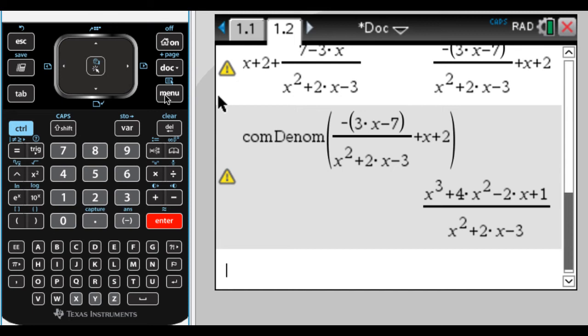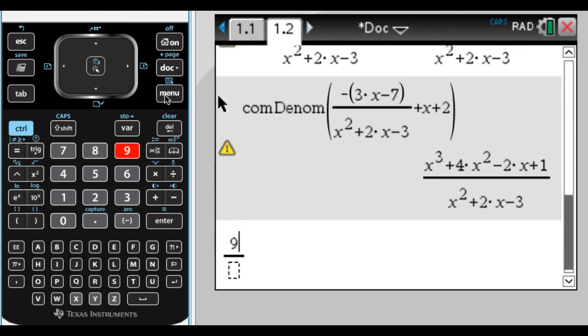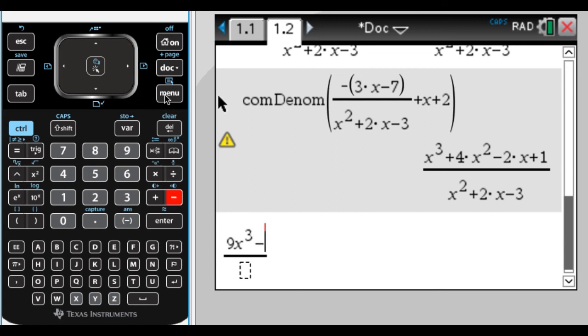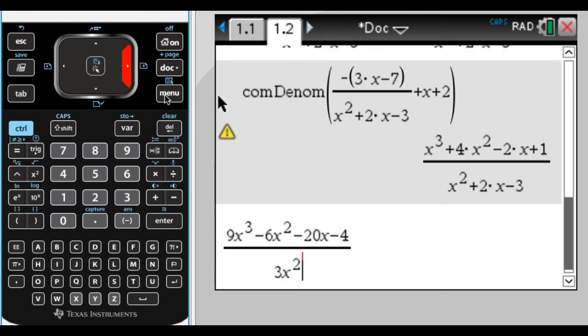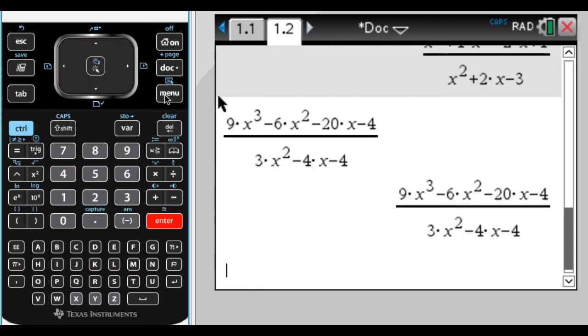So I'll do one more where I just get the answer straight away. So the next one I'm going to do is 9x cubed minus 6x squared minus 20x minus 4, all over 3x squared minus 4x minus 4. So when I press enter, nothing happens.